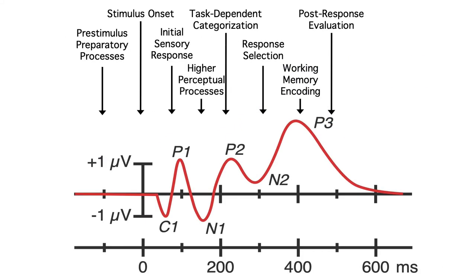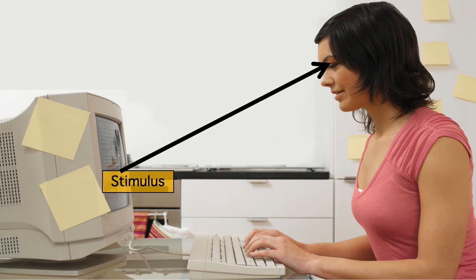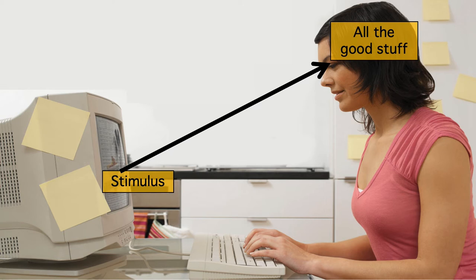The answer is that ERPs provide a continuous measure of activity at each moment in time. This allows us to measure the brain processes that occur between the stimulus and the response, instead of just measuring the behavioral response that comes at the end of these processes. In a typical button press task, the stimulus appears on the screen, goes into the subject's eyes, and then all the good stuff happens that we actually want to understand. While all that good stuff is happening, we get no information from behavioral measures.